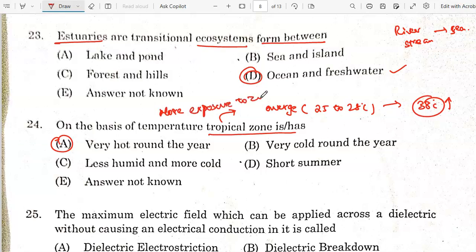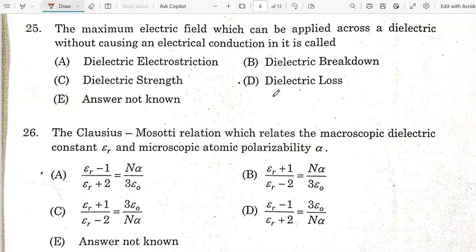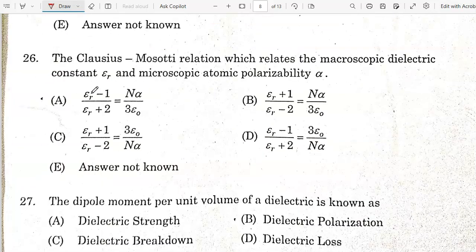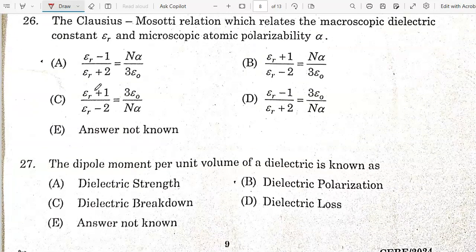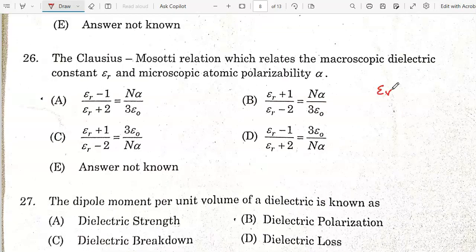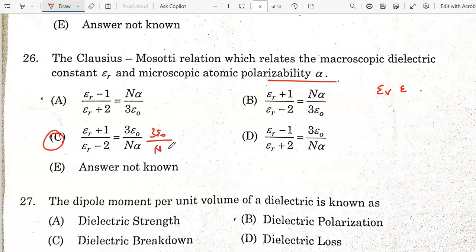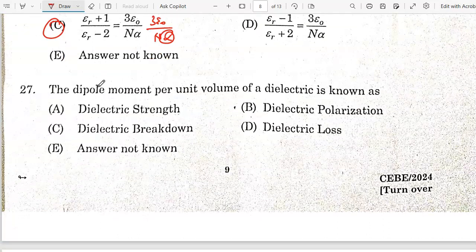The maximum electric field which can be applied across a dielectric without causing electrical conduction is said to be dielectric strength. Option C is correct. Clausius-Mossotti relation relates the macroscopic dielectric constant epsilon r and microscopic atomic polarizability alpha. It is epsilon r plus 2 divided by epsilon r minus 1 equals n alpha. Option C is the correct answer. The dipole moment per unit volume of dielectric is said to be dielectric polarization.